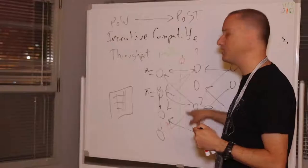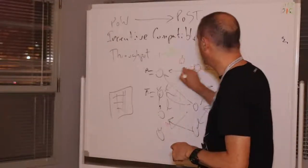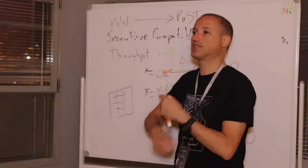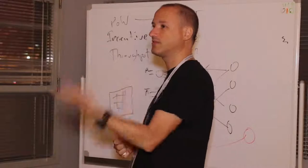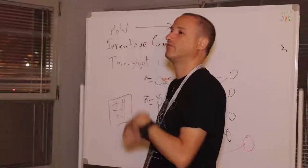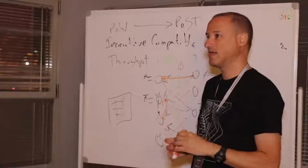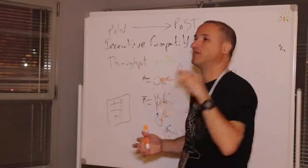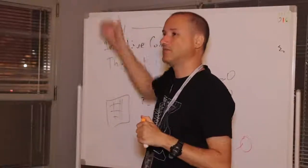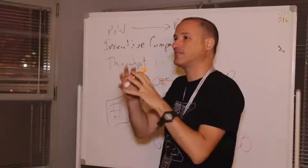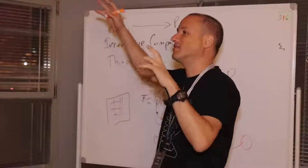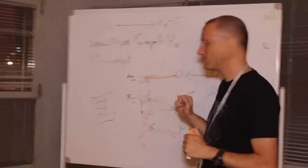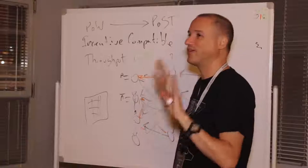In the Tortoise protocol, every block votes for the blocks it thinks are valid. For older blocks, we count votes. If I see a majority that thinks a block is valid, I vote for it; if I see a majority thinks it's invalid, I vote against it. Because honest blocks are always in the majority, the margin — the difference between for-votes and against-votes — always grows in the same direction. This gives us irreversibility. Just like Bitcoin, the probability of reversal goes exponentially down with the size of the margin.